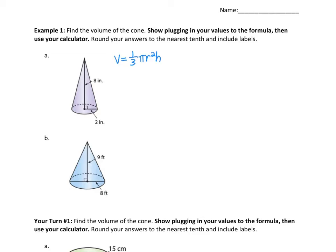Remember, that means the volume of a cone is just one-third of the volume of a cylinder with the same sized base and the same height. So if you know the formula for a cylinder, you just divide that by three to find the volume of the cone.